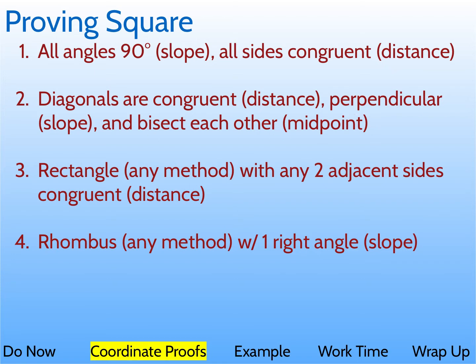You could also prove that it's a rectangle using any method, like for example all the angles are 90 degrees, and you could show that any two adjacent sides are congruent, so two sides next to each other are the same length. Or you could show it's a rhombus, usually showing that all sides are the same, and show that there's one right angle using the slope.